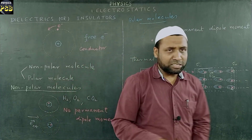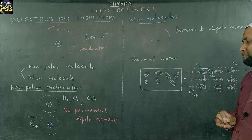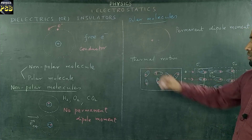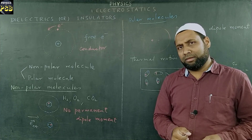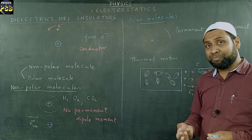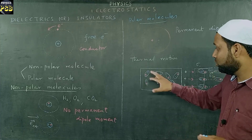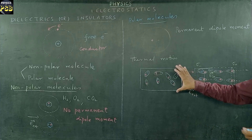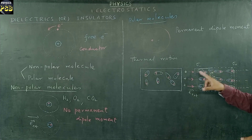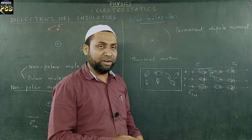Now, coming back to polar molecules — I used the word thermal motion. The word thermal means heat. Due to the heat in the surroundings, the internal energy of the dipoles increases, and as a result they start moving. That random motion makes them align in different directions. But when we place such a substance in an external electric field, they get aligned in a particular direction. We call this phenomenon of alignment of dipoles in the presence of an external electric field as polarization.